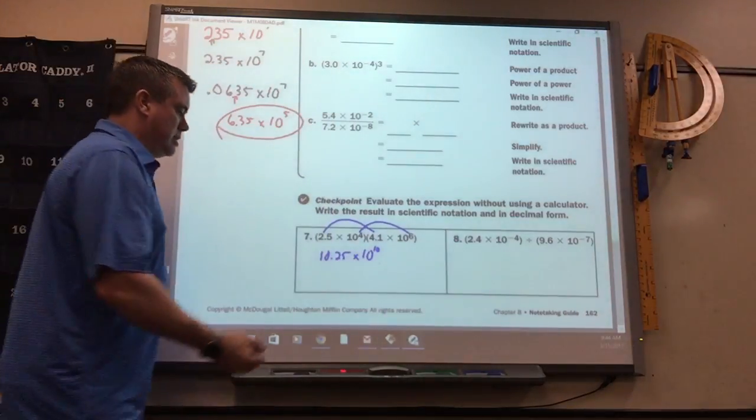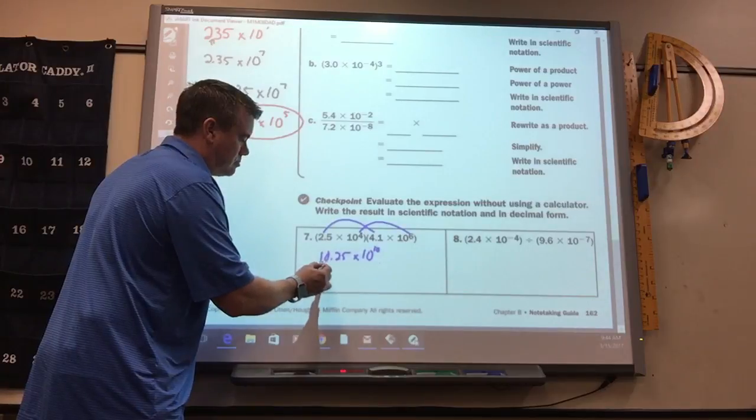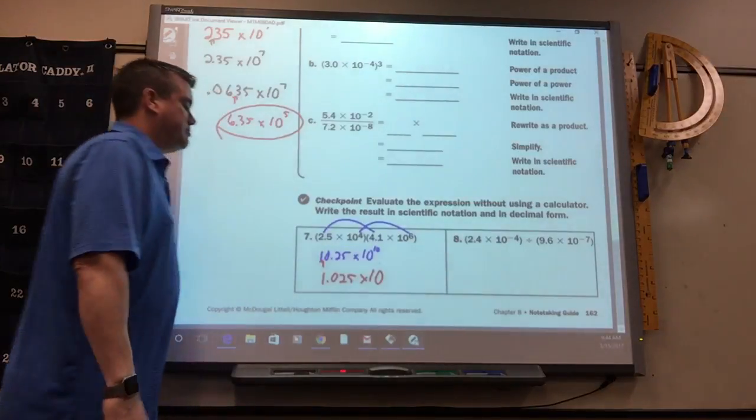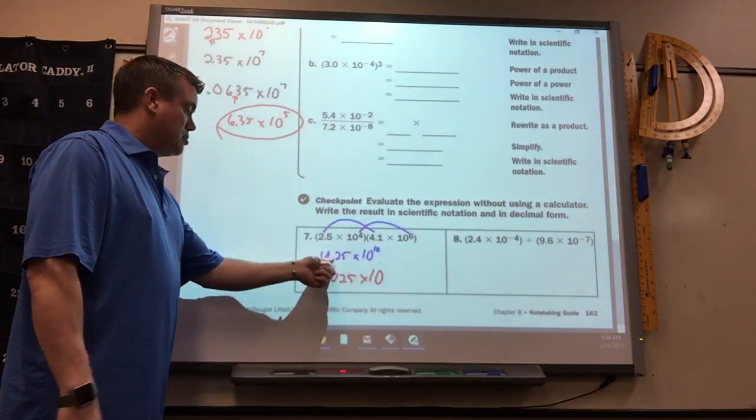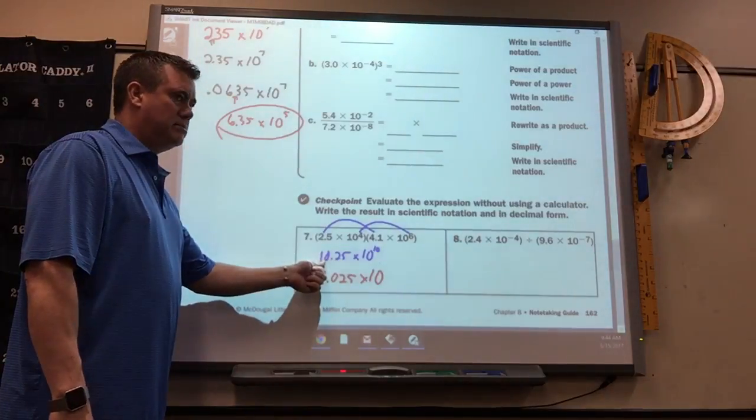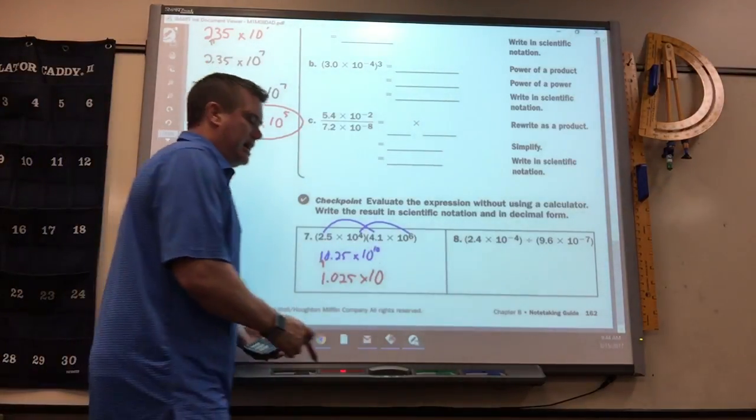So, this one, the decimal should be there. So, it should be 1.025. So, you can think of it this way. I didn't move it far enough. It should have been there. So, that means I had to move it one more. So, that makes that 11.